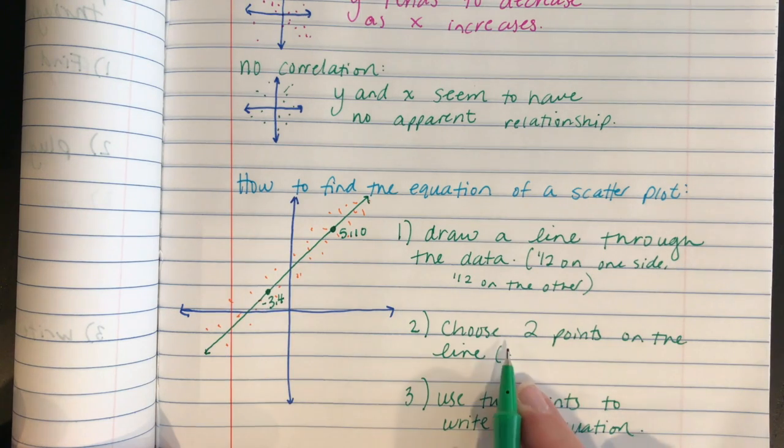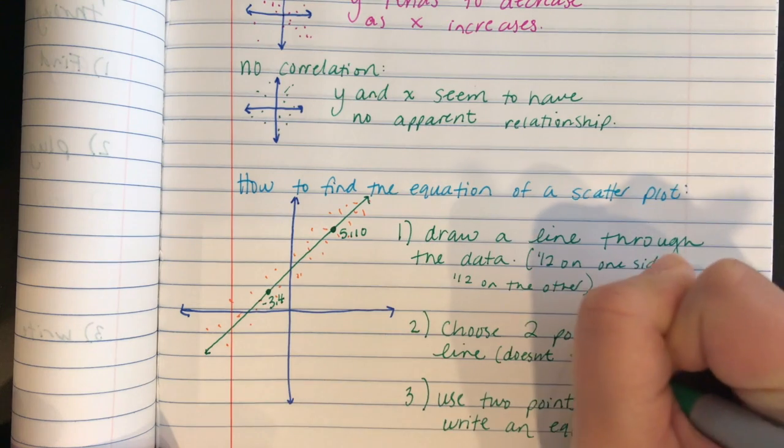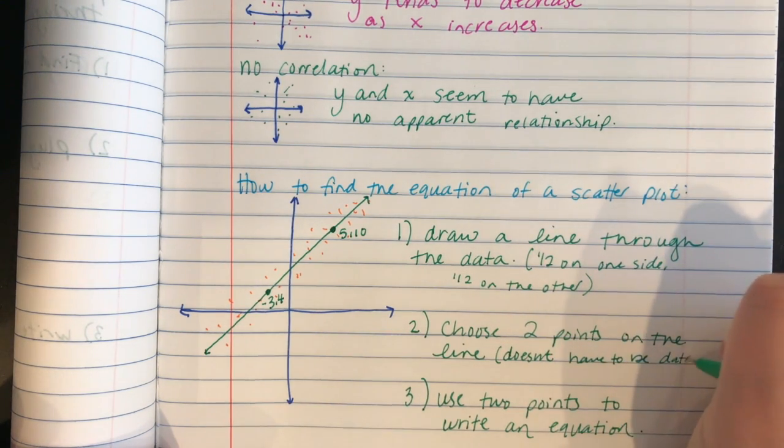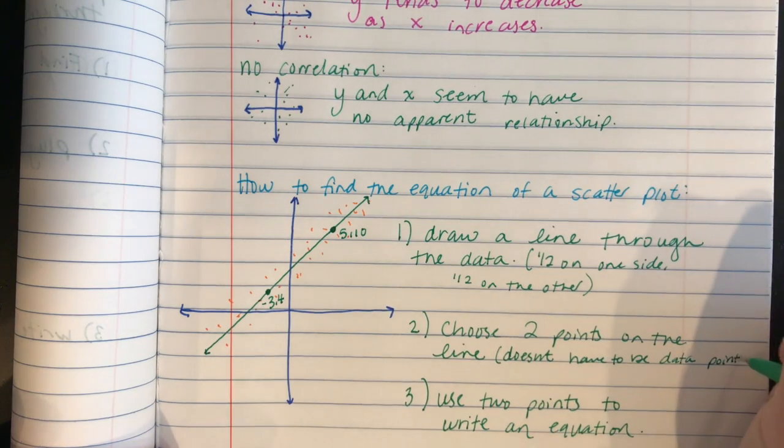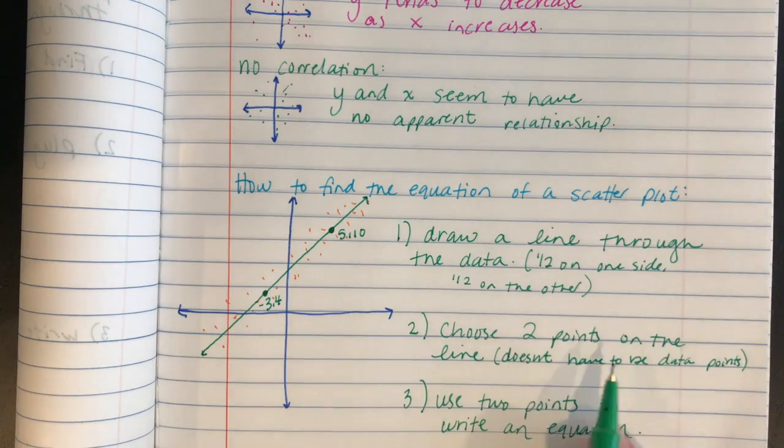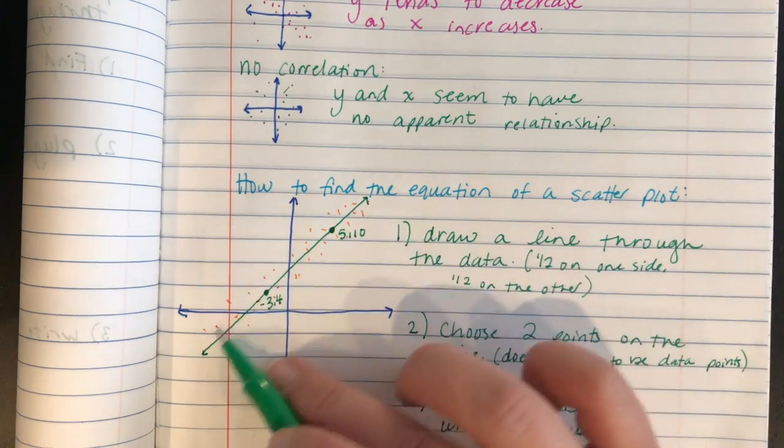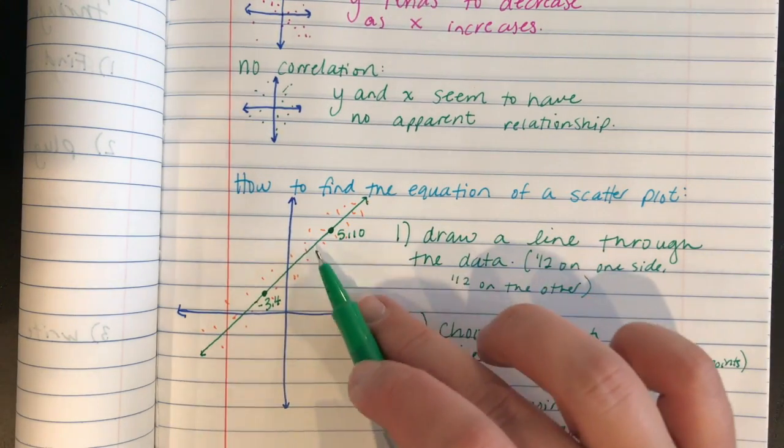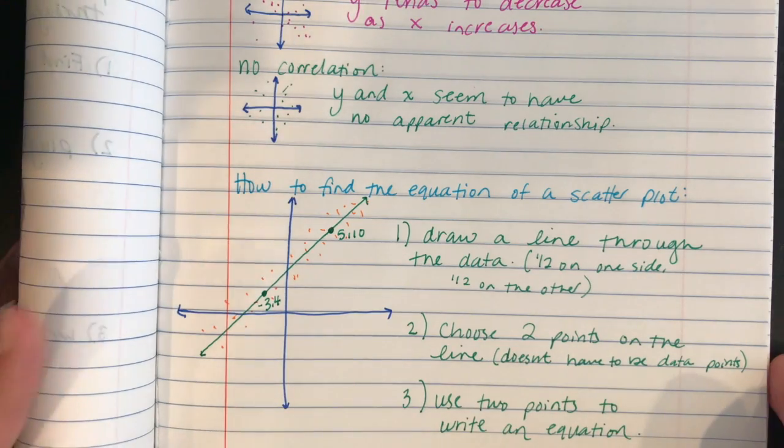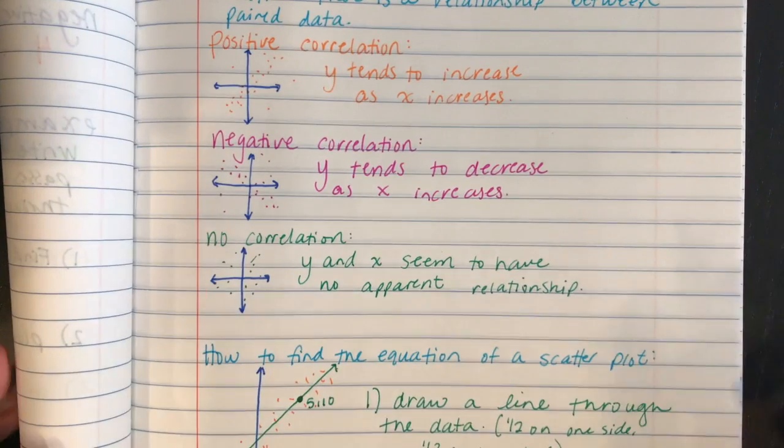And I'm going to add to this, doesn't have to be data points. If they are great, I mean you'd get a way more accurate line if they were, or you might get a more accurate line if they were data points, but just any points on the line. Again, they don't have to be one of these orange ones, they can be any points on the line. So that is how you do a line of best fit, and this is how you find a correlation.